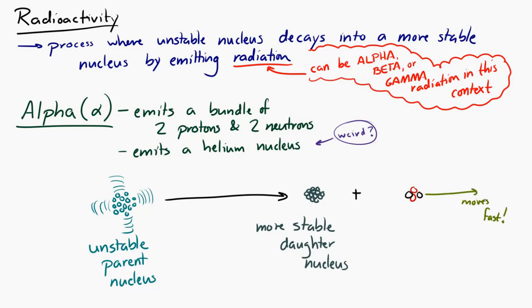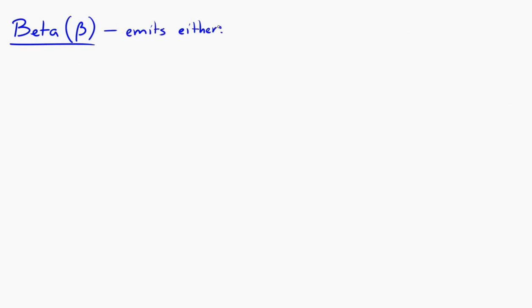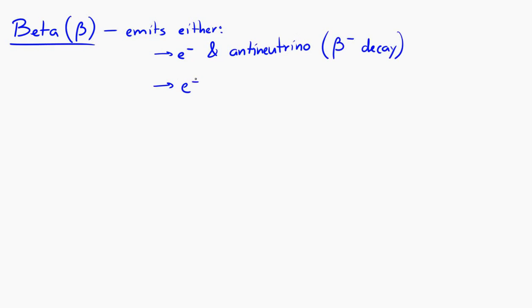If we have beta radiation, that's when you have an unstable nucleus that emits either an electron and an antineutrino — that's called beta minus decay — or a positron and a neutrino, which is called beta plus decay.